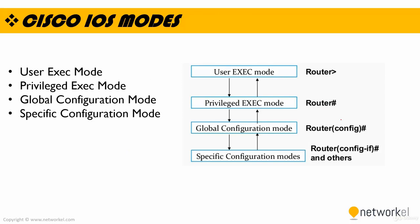Let's take a look at the Cisco IOS modes. We have four modes. The first one is user exec mode. When you are in user exec mode, you can see a greater-than sign that shows you are in user exec mode. In privileged exec mode, you see a pound sign. In global configuration mode, that shows you that you are in global configuration mode — config. And we have also specific configuration modes like interface mode. For example, when you open an interface, you see config-if mode.